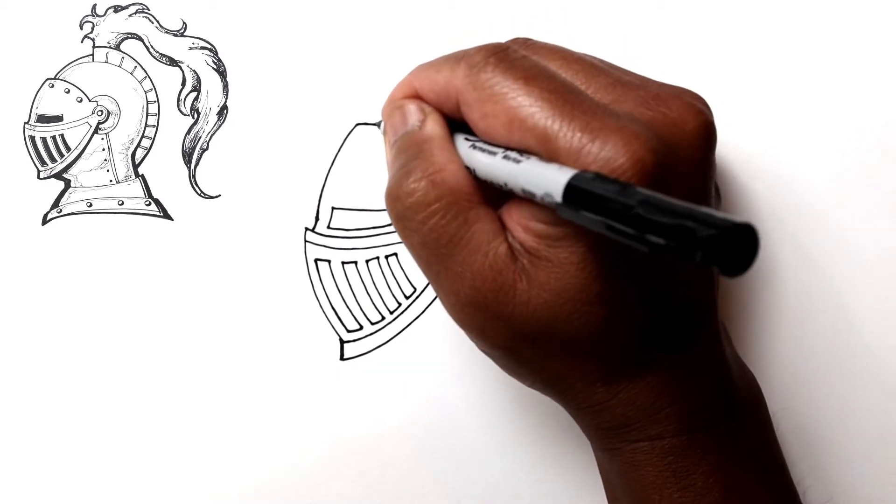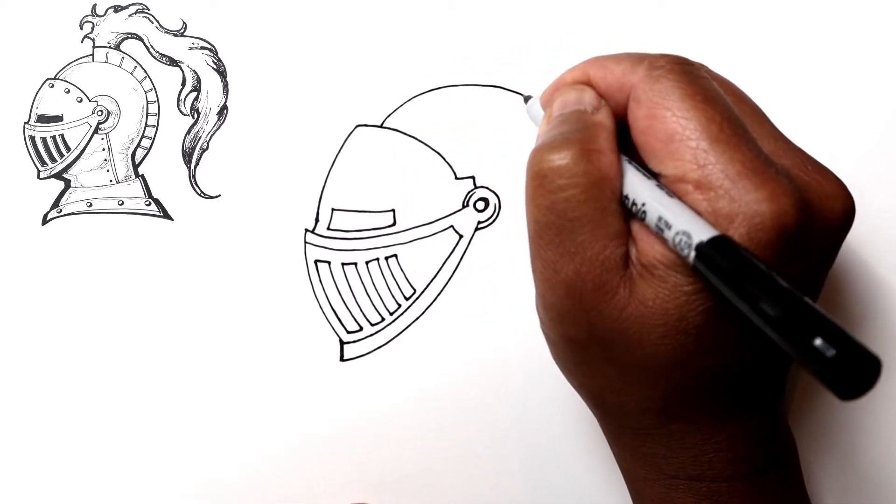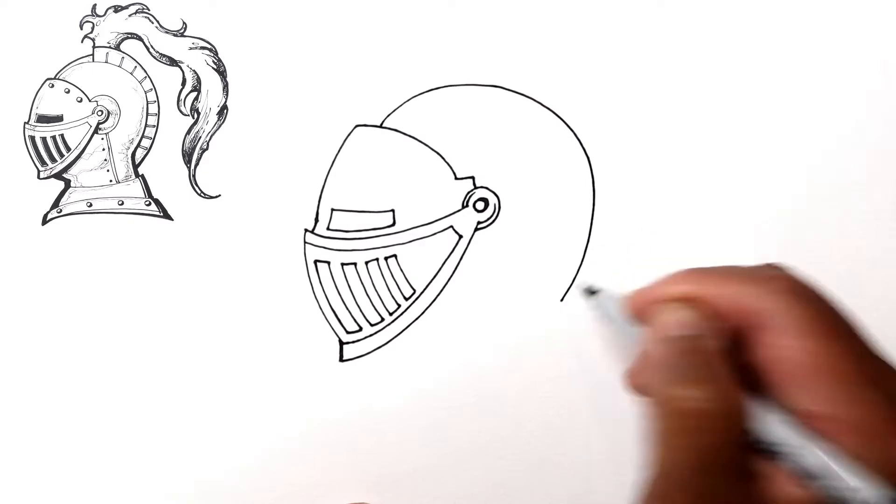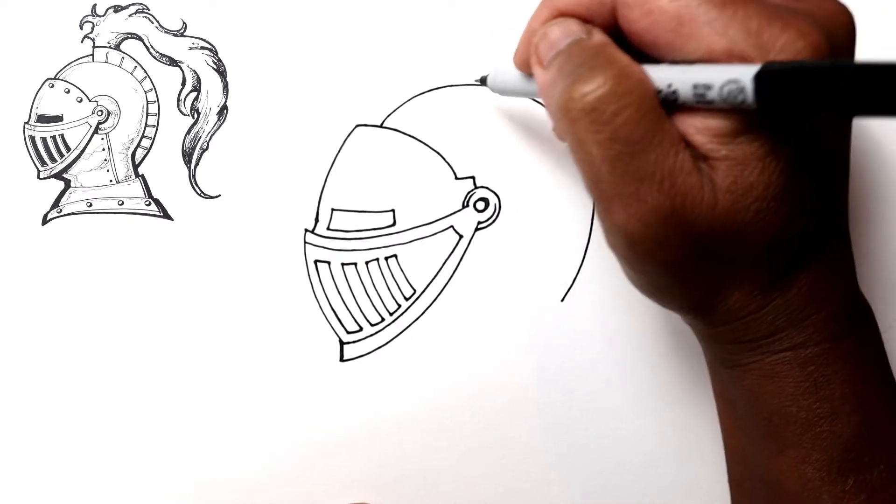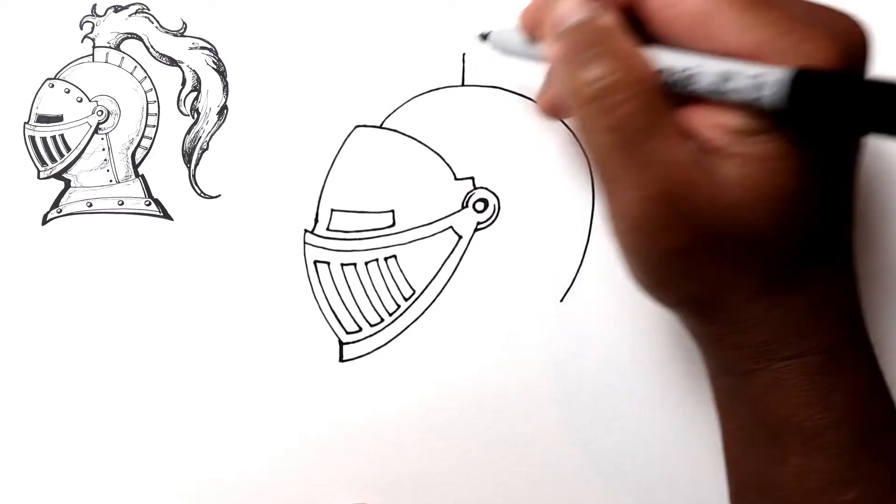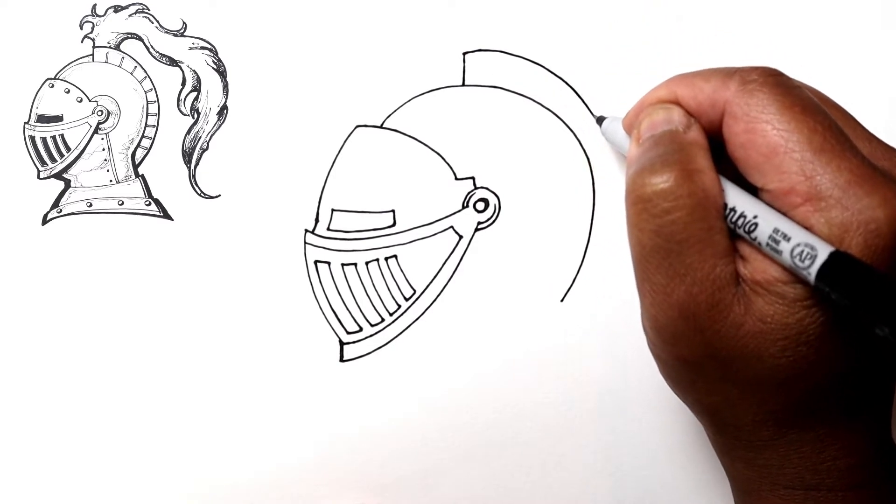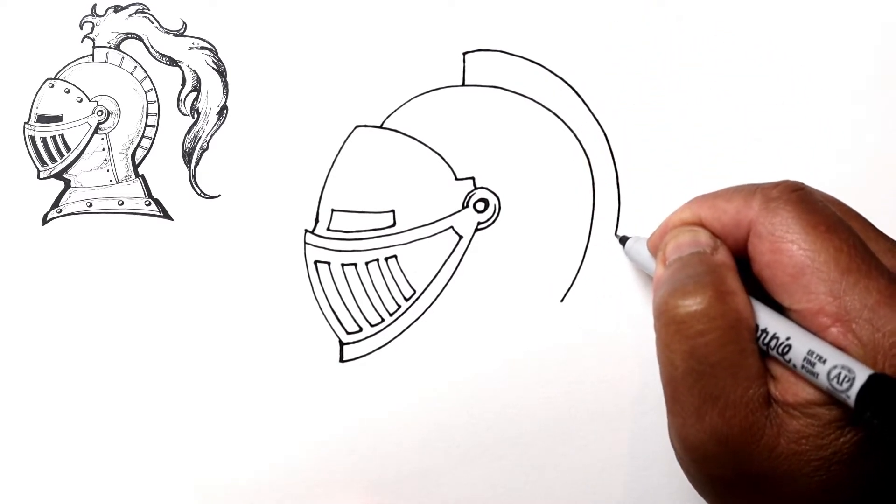Let's draw a curved line that goes all the way around to maybe right there. Up here, let's draw a line straight up, and then another line that's sort of parallel but then it starts to get closer to that first line that we drew.